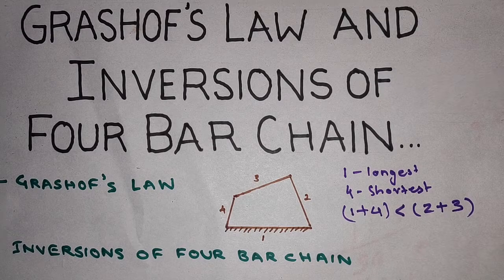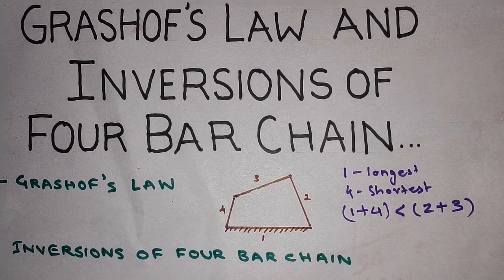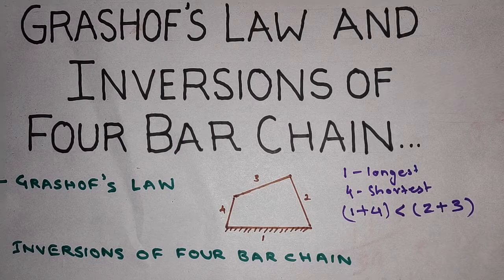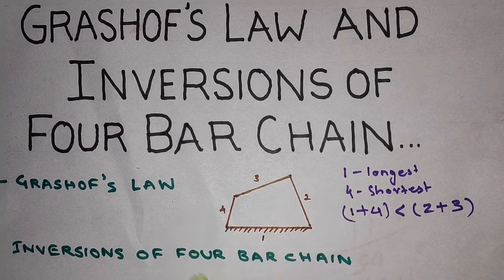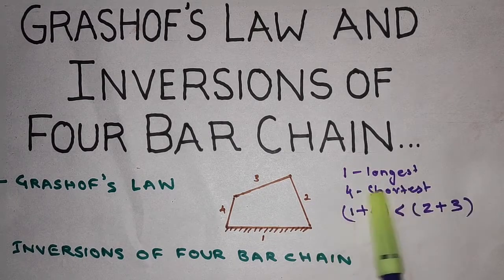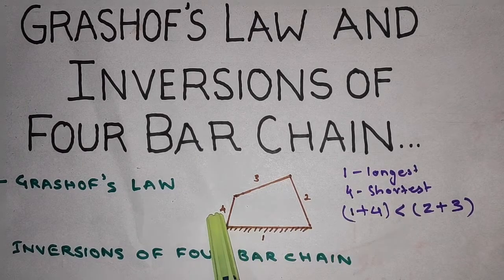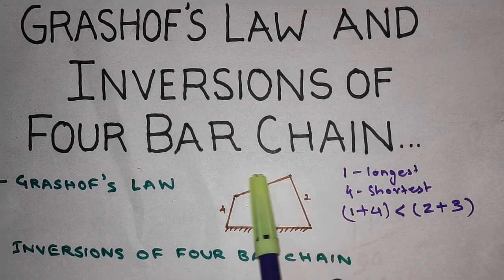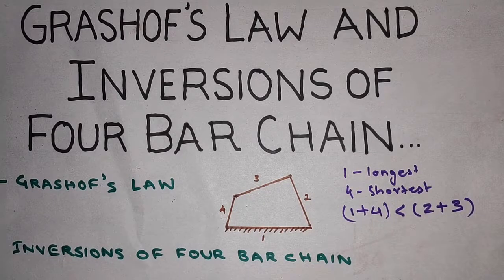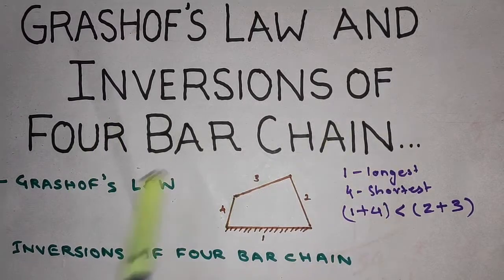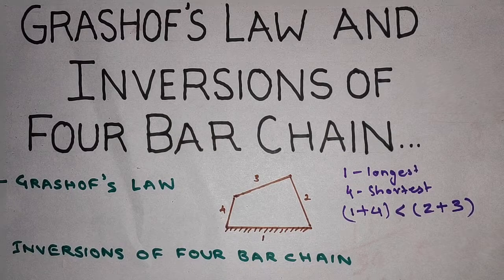In summary, for a 4-bar mechanism the sum of the shortest and longest links should not be greater than the sum of the remaining two links if continuous relative motion is to be maintained. This is Grashof's law, and based on it we have four inversions of the 4-bar mechanism.